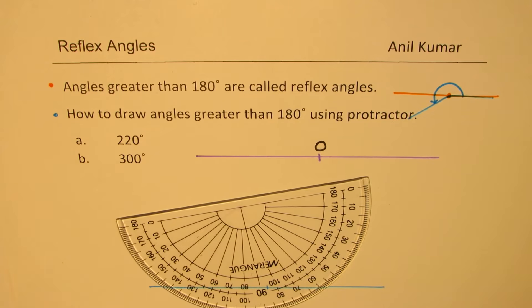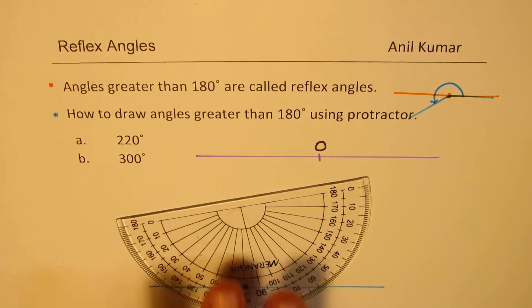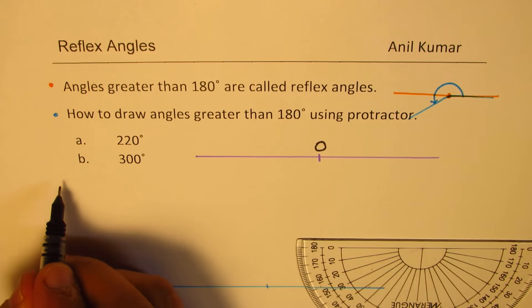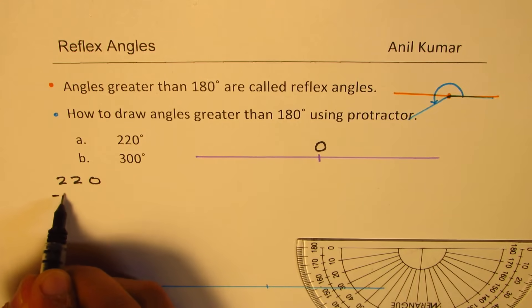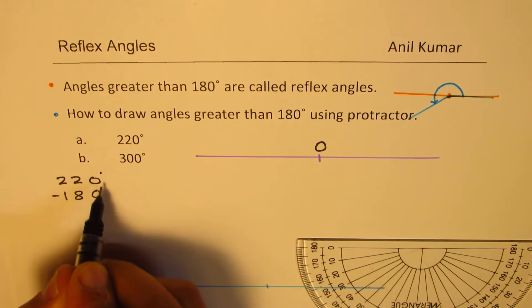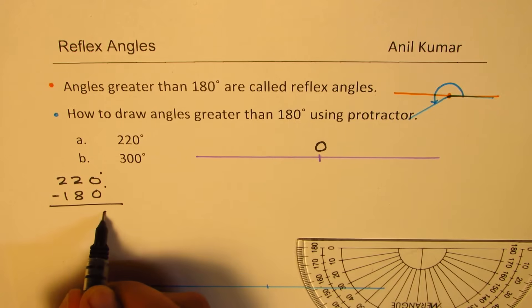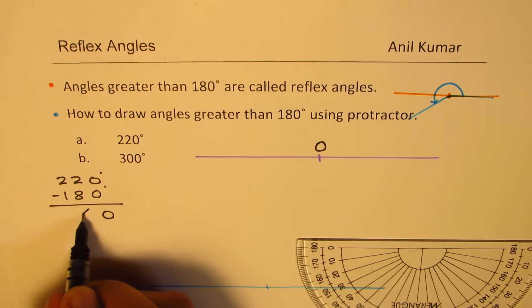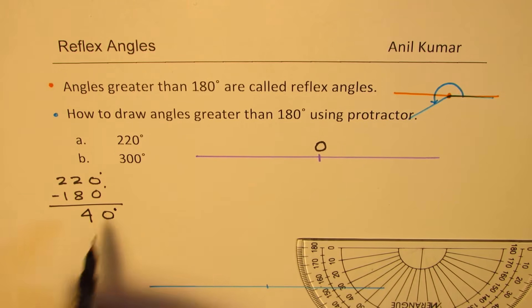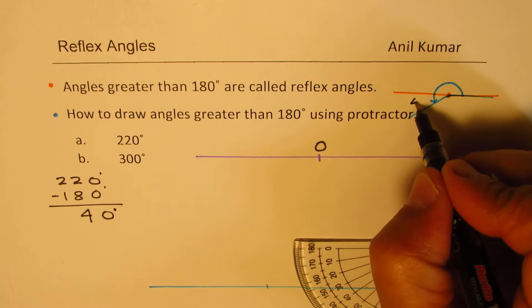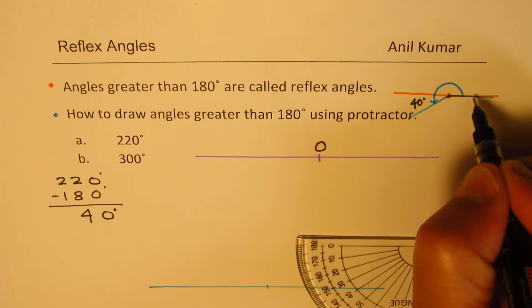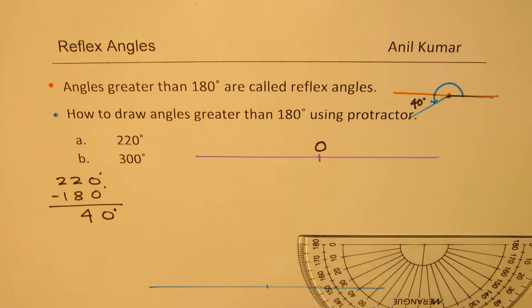And we want 220 degrees. So what is 220 degrees? Well, 220 degrees, if I take away 180 degrees, what do I get? I get 12 minus 8 as 4, 40 degrees. That means I have to draw 40 degrees more. So if I have this as 40 degrees and this is 180, total will be 220 degrees. So that is the idea.